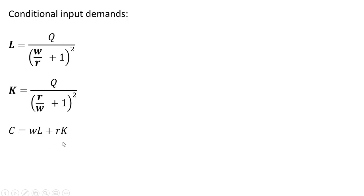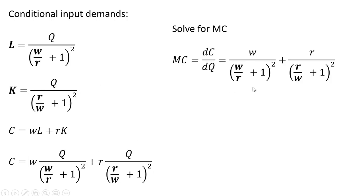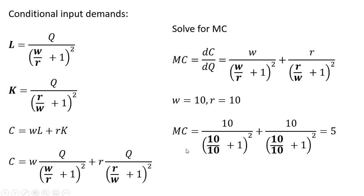Now let's construct the firm's cost function. Cost equals W times L plus R times K. Where we have L we replace it with the conditional input demand for labor, and where we have K we replace that with the conditional input demand for capital. Making that substitution and then taking the derivative of the cost function with respect to Q gives us marginal cost. Plugging in W equals 10 and R equals 10, we see that the firm has a constant marginal cost of $5.